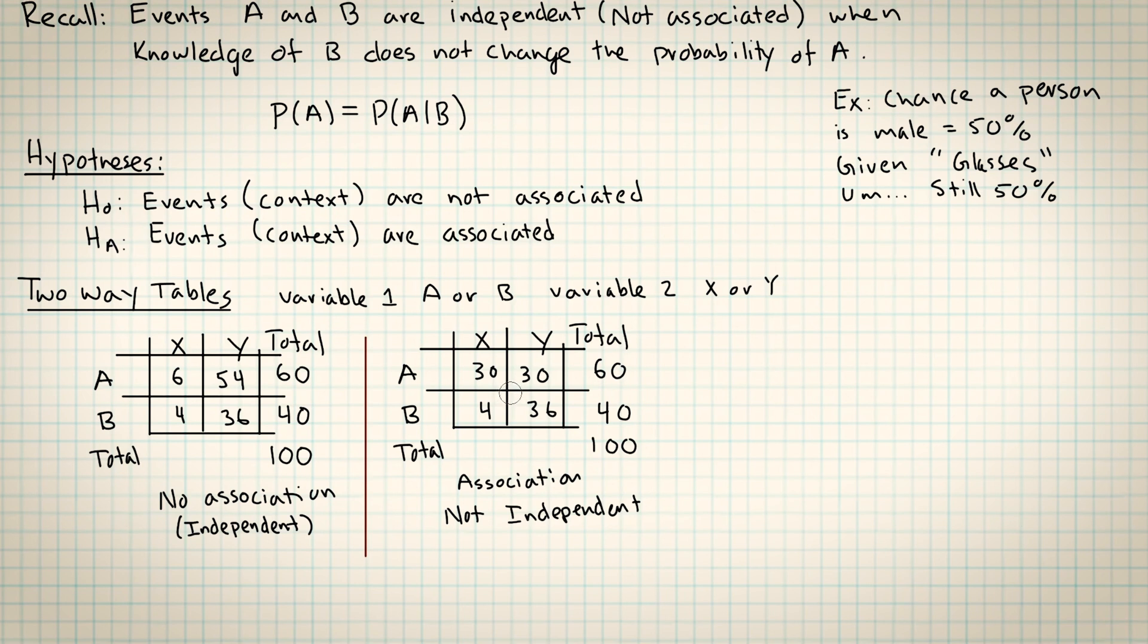This rabbit hole goes a little bit deeper though. Because we are taking a random sample, these things don't have to work out as perfectly as they do. If in the first situation where it looks like there's no association, suppose I changed this 6 to a 7 and I changed this 54 to a 53. Now it's not perfectly 10%, 90% split between the two categories, but it still looks like there's no association because it was just one person changing their mind. So somehow we need to bring in the fact that these things come from a sample in order to make predictions about whether or not the variables are associated or independent.